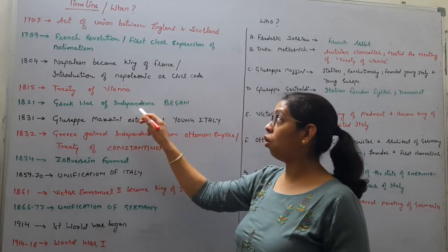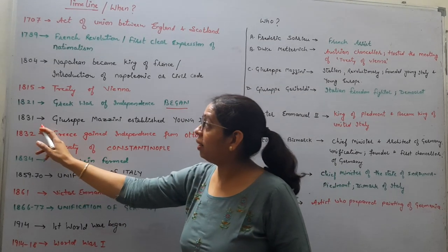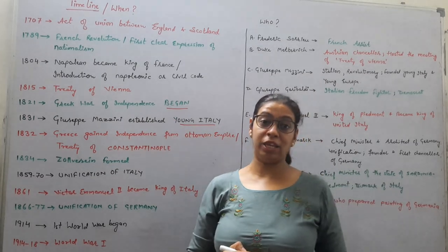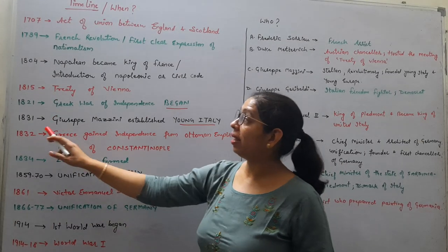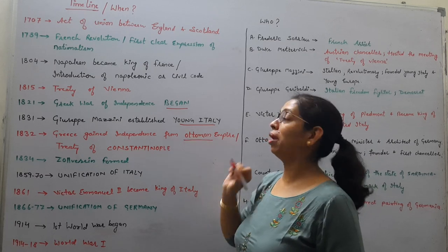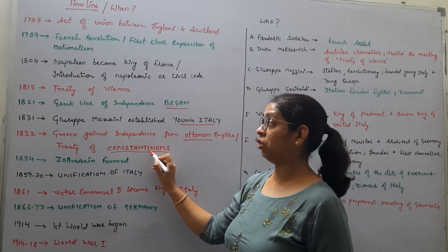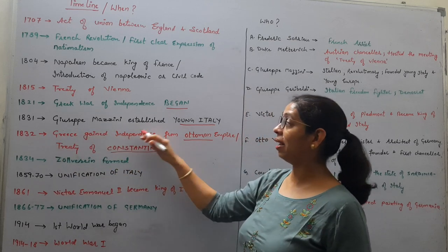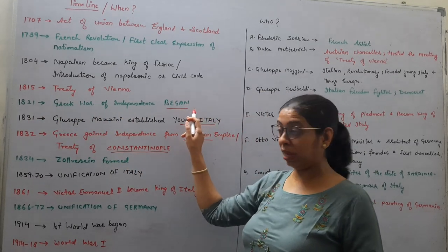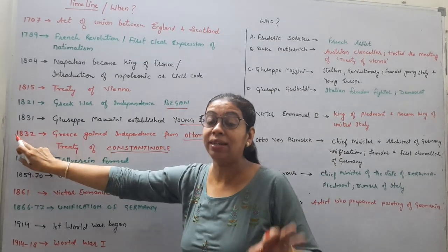1821 — the Greek war of independence began. 1831 — Mazzini established Young Italy, a very famous organized secret society of revolutionaries. 1832 — Greece gained independence from the Ottoman Empire through the Treaty of Constantinople, which is very important as it officially declared Greece's independence as a country.